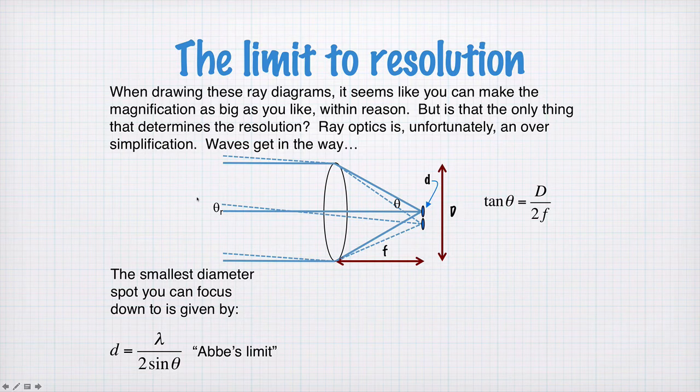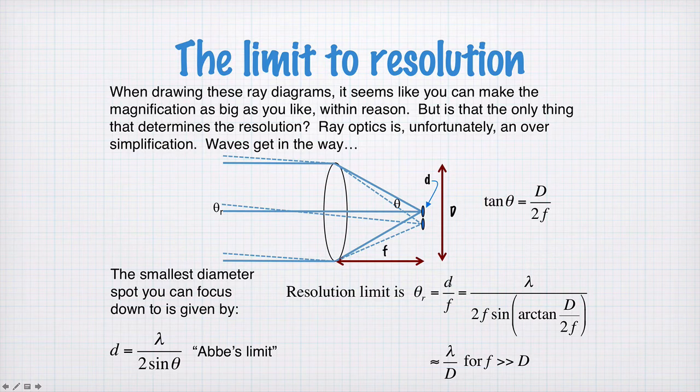Okay, so let's try and figure out what theta r is in terms of other parameters in this problem. So theta r can be written approximately as d divided by f. So d is the diameter of these spots. So if we have two of these spots next to each other, if we go from the middle of this spot to the middle of this spot, that's the distance d.